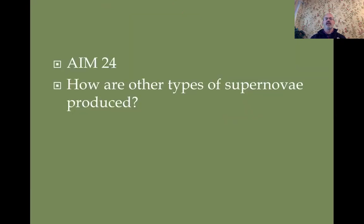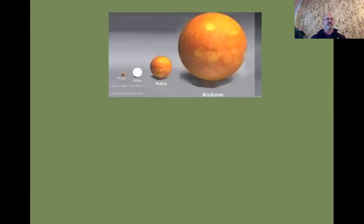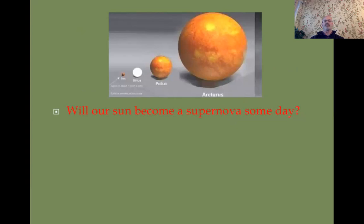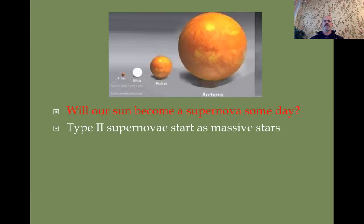Our aim today is: how are other types of supernovae produced? You might wonder — will our Sun become a supernova someday? It turns out our Sun is not big enough. Type 2 supernovae start out as massive stars greater than about eight times the mass of the Sun.